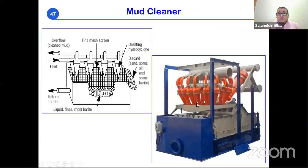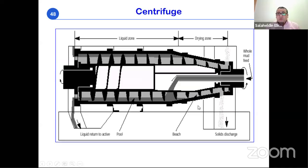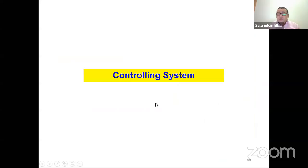The mud cleaner combines the desander, desilter, and shaker in one unit and is used when the primary shale shaker is not working properly — though it also has a fluid discharge waste issue. The centrifuge removes very fine particles and can even separate weighting material from the drilling fluid, which is critical because the recovered weighting material is needed to maintain the required mud density.